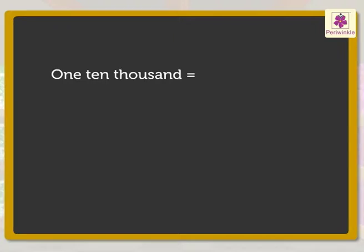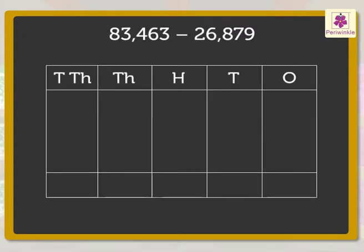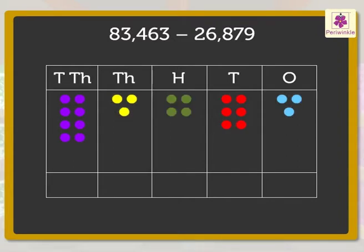Let us represent each 10,000 with a purple dot. The number 83,463 will be represented like this.